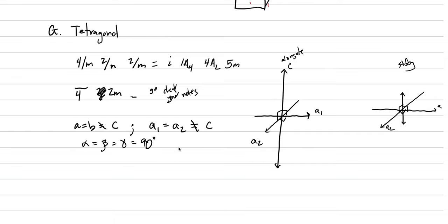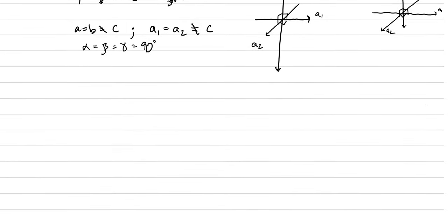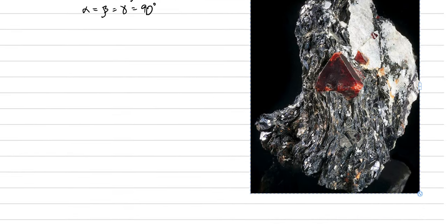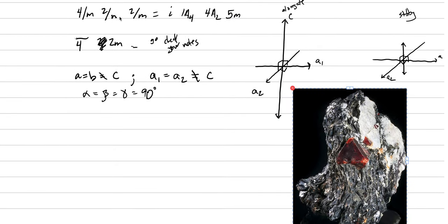To identify a tetragonal mineral quickly, just visualize the length of those axes and the angles between it. Let's actually give it a try here in person with this zircon image. Zircon is a tetragonal mineral. It's 4 over M, 2 over M, 2 over M, and as we picture this, I just want you to think, okay, there's an axis here, that's the C, and then we have one shooting out here, and another shooting out here. It's 90 degrees to one another, and that's 90 degrees to that. That's got to be tetragonal. We're going to try to train your brain to think that way.